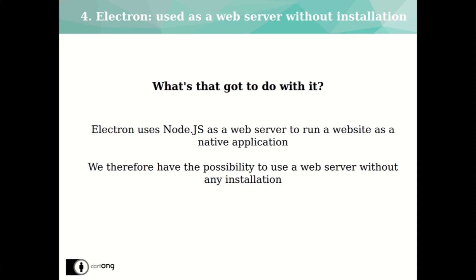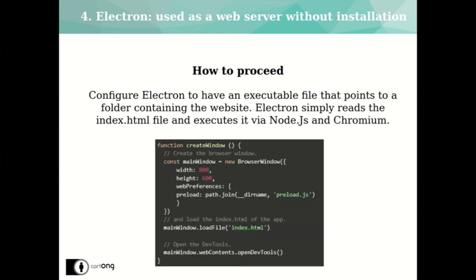But what does this have to do with a web server? The Electron framework uses Node.js as a web server to ensure that the application runs smoothly. Packaging the web application with Electron allows us to provide an executable file without installation that runs the application on a web server. Our goal was not to make a multi-OS application — all our users being on Windows. We simply wanted Electron to launch our HTML page as the user did before, so we configured Electron to launch a web browser pointing to a folder that contains the files of our site.